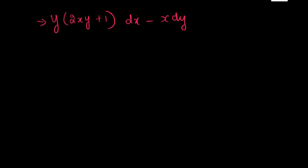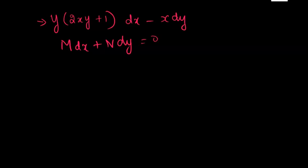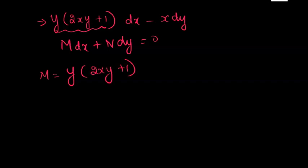In this video, let us solve this problem. In the previous video, we already solved problems which are exact and reducible to exact. Now, the general format is M dx plus N dy equals 0. In place of M, I have this function. So M equals y times (2xy + 1) and N equals minus x.